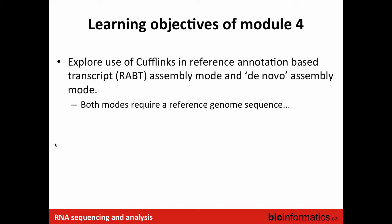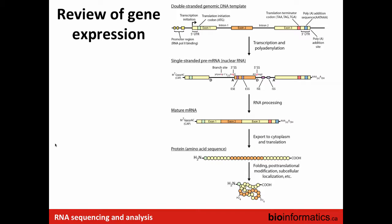In terms of the hands-on component, we're going to use Cufflinks again but in a different mode that's more geared towards isoform discovery and abundance estimation. Both of these modes still require a reference genome sequence. Up till this point we've been focusing largely at the gene level and not really paying too much attention to specific isoforms.